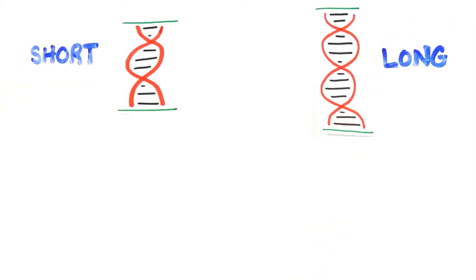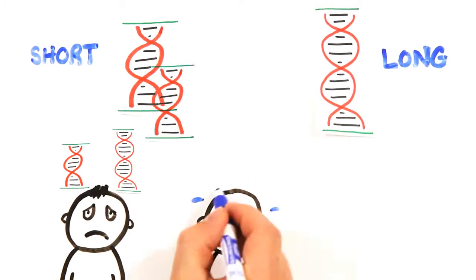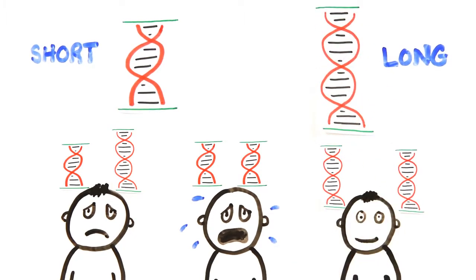After tracking 800 young adults over five years, the study revealed that 33% of individuals with one short version became depressed after stressful life events, and people with two short genes fared even worse. On the other hand, those with two long genes were much less likely to become depressed with similar life stress.